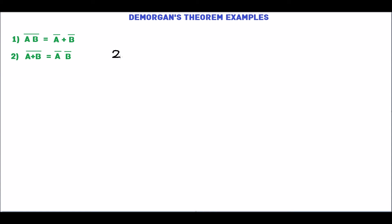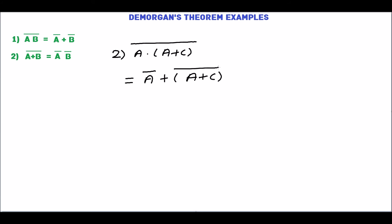Next, we will simplify the expression A dot (A plus C) complement. AB complement is A complement plus B complement. So, based on this, we can write A dot (A plus C) complement as A complement plus A plus C complement.